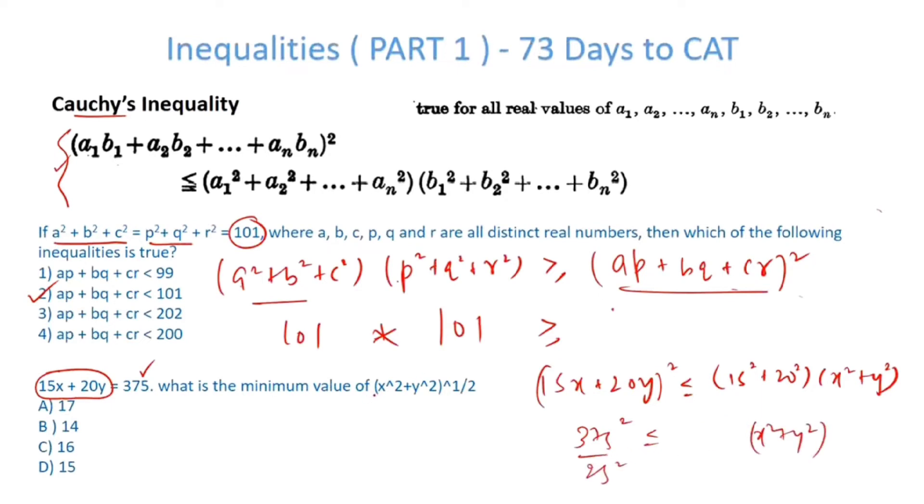We have to find out minimum value of root over x squared plus y squared. So if I take root this becomes 375 by 25. This is 1 times and 5 times. So the minimum value here is 15.